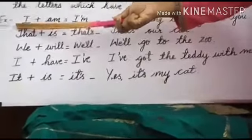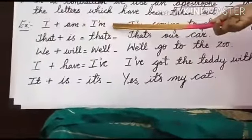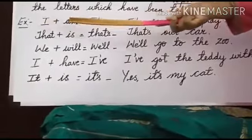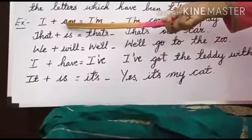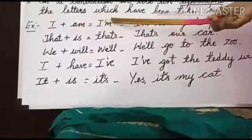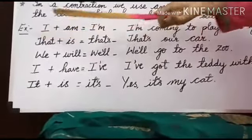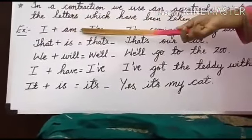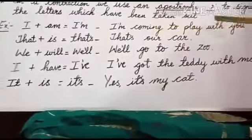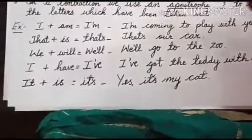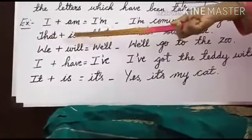Let us move into some examples. 'I' plus 'am' is equal to 'I'm'. There are two words — 'I' and 'am' — and in this word the letter 'a' is removed and an apostrophe is placed. So 'I'm' is the combination of 'I' and 'am', and it is pronounced as 'I'm'. For example: I'm coming to play with you. The next word: 'that' plus 'is' is equal to 'that's'.